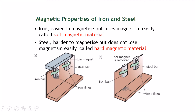Let's do a bit of proof. We have two bars here — one iron bar and one steel bar. A bar magnet is placed on top of these previously unmagnetized bars. The north pole makes one side a south pole and the other a north pole, turning them into magnets — both bars are now induced magnets. The iron bar has a lot of iron filings attached to it, showing that iron is easier to magnetize and is a stronger magnet while the bar magnet is on top. The steel bar has only a little bit of iron filings, showing that steel is harder to magnetize.